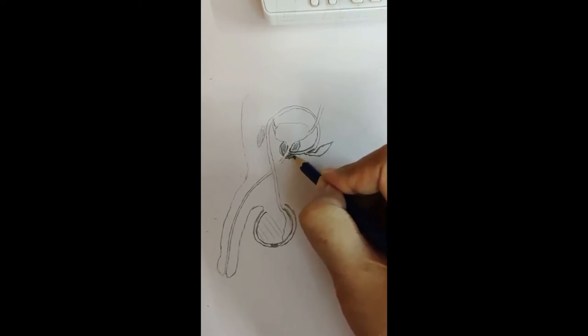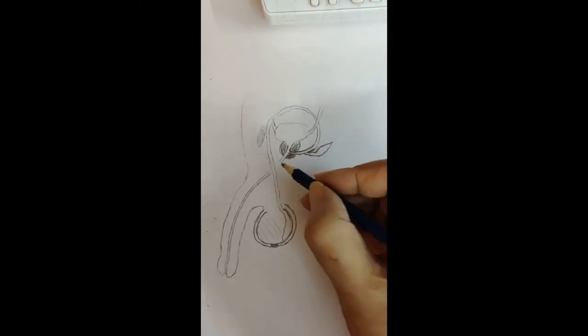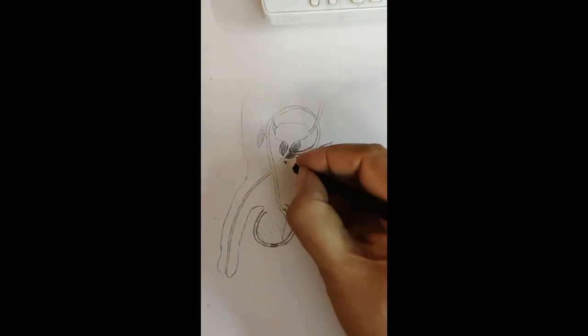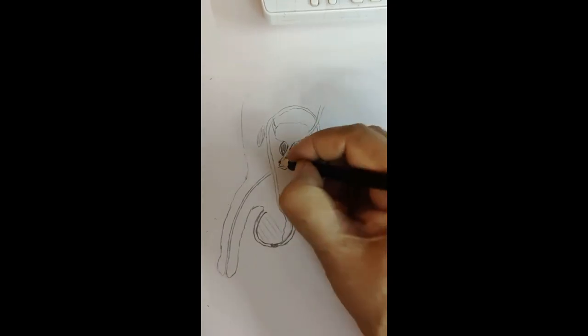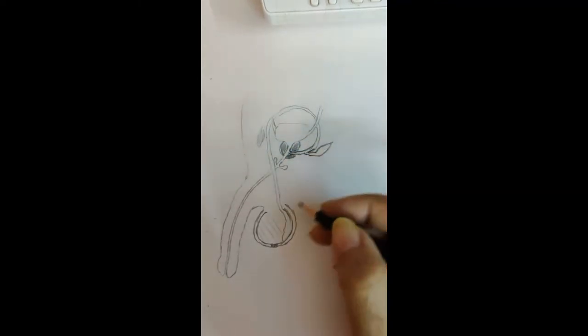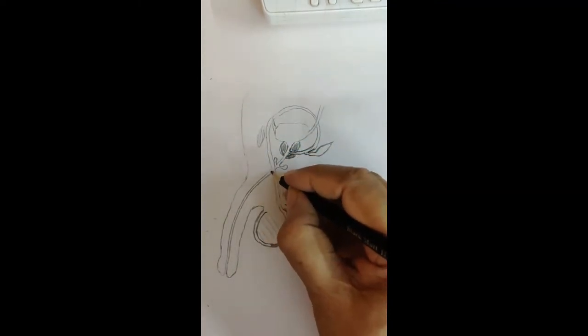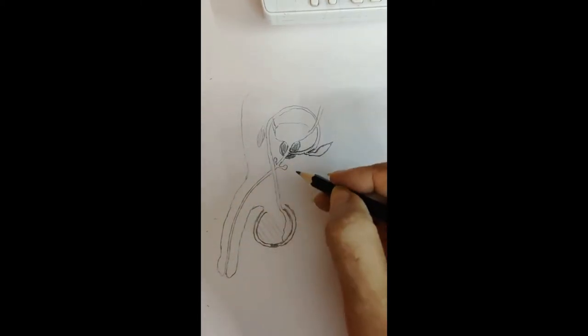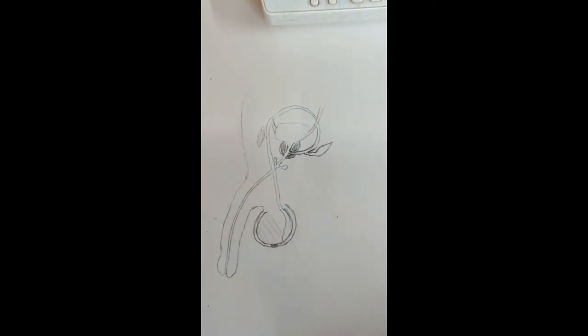Now this is membranous urethra which will receive the secretion from two pea sized glands they are called the Cowper's gland or bulbourethral glands. After that this urethra will continue into the penis in the form of penile urethra.